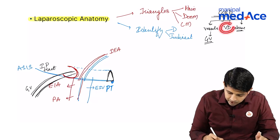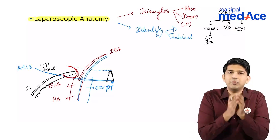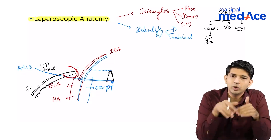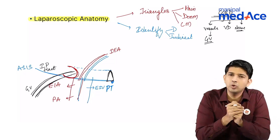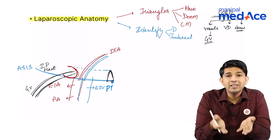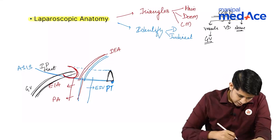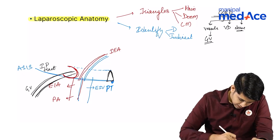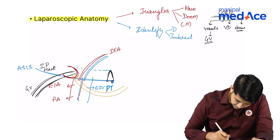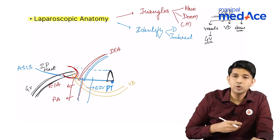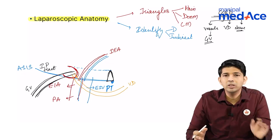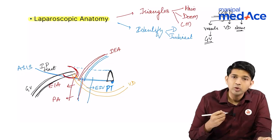Next, let us talk about the vas deferens. The vas deferens basically carries the semen from the testis and eventually has to exit through the urethra — through the prostate, seminal vesicles, and through the urethra. The prostate and seminal vesicles are on the medial aspect, so the vas deferens is going to go medially, empty into the seminal vesicles and the prostate, and then go out through the urethral opening. That is how sperms are going to travel.